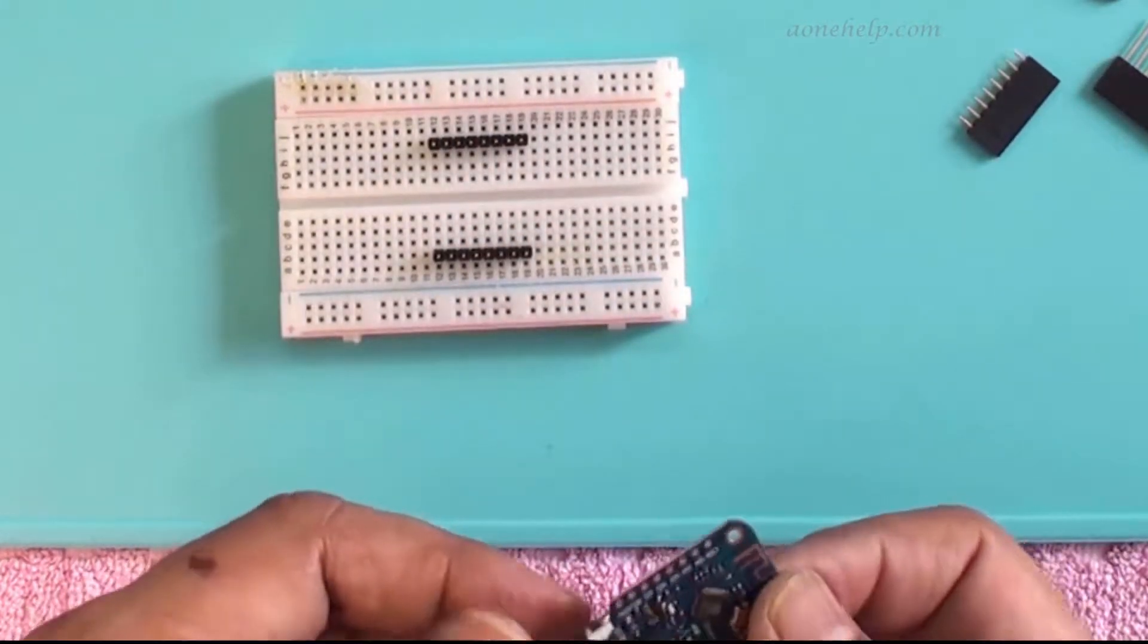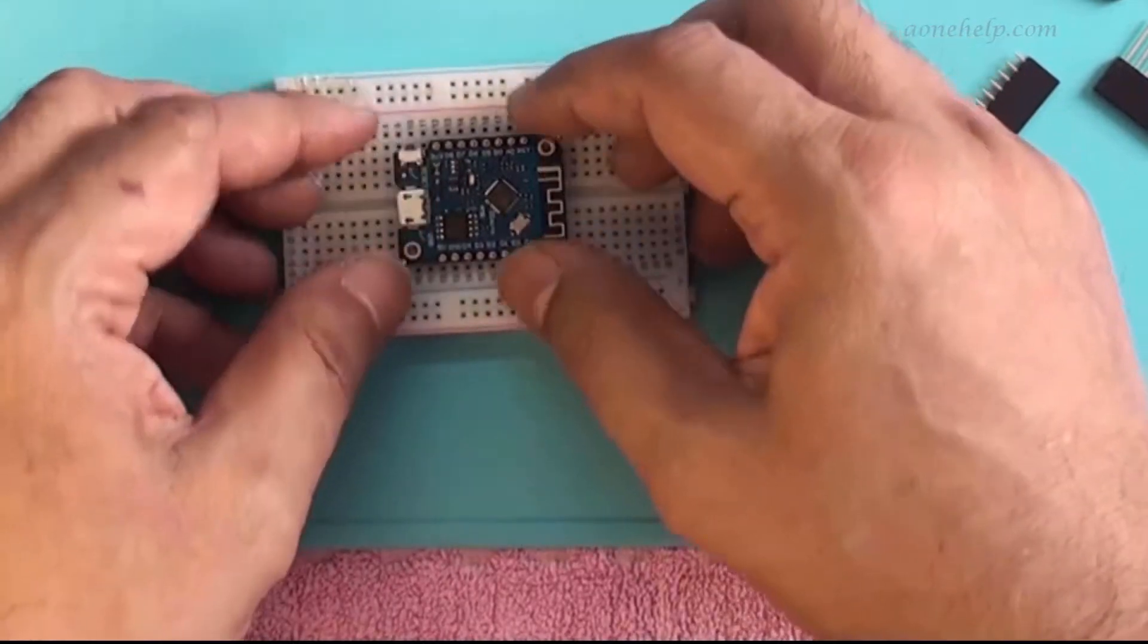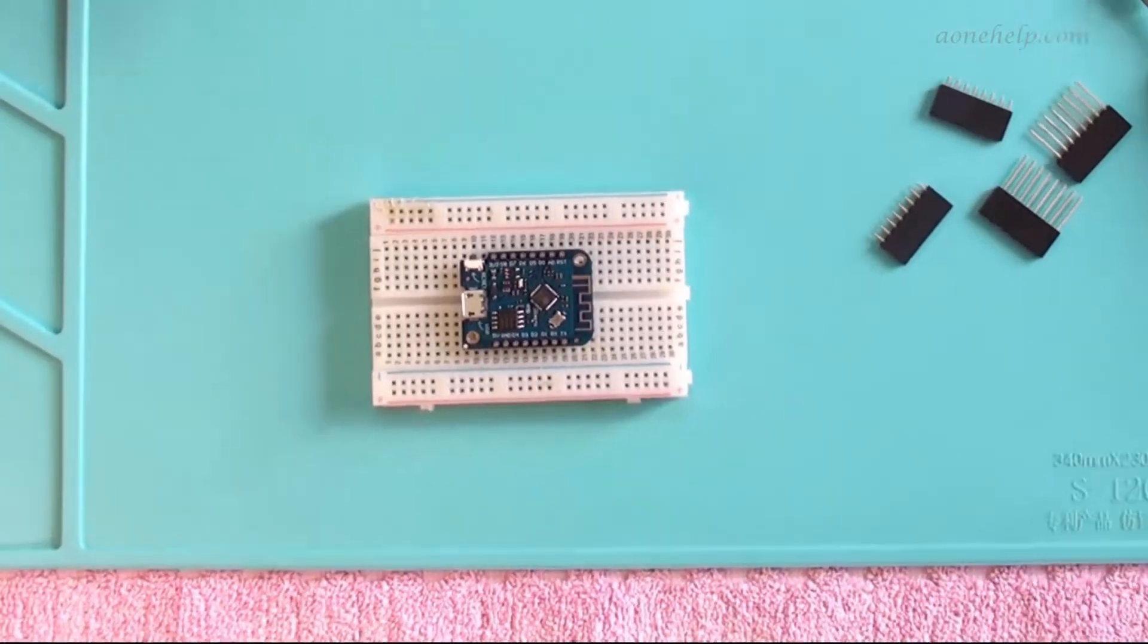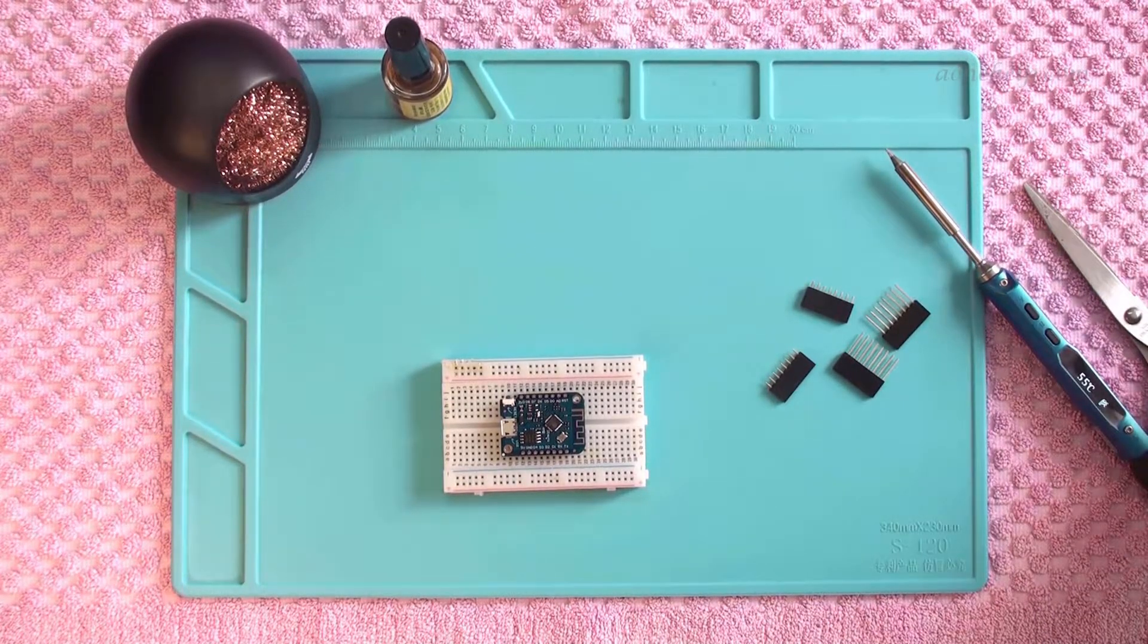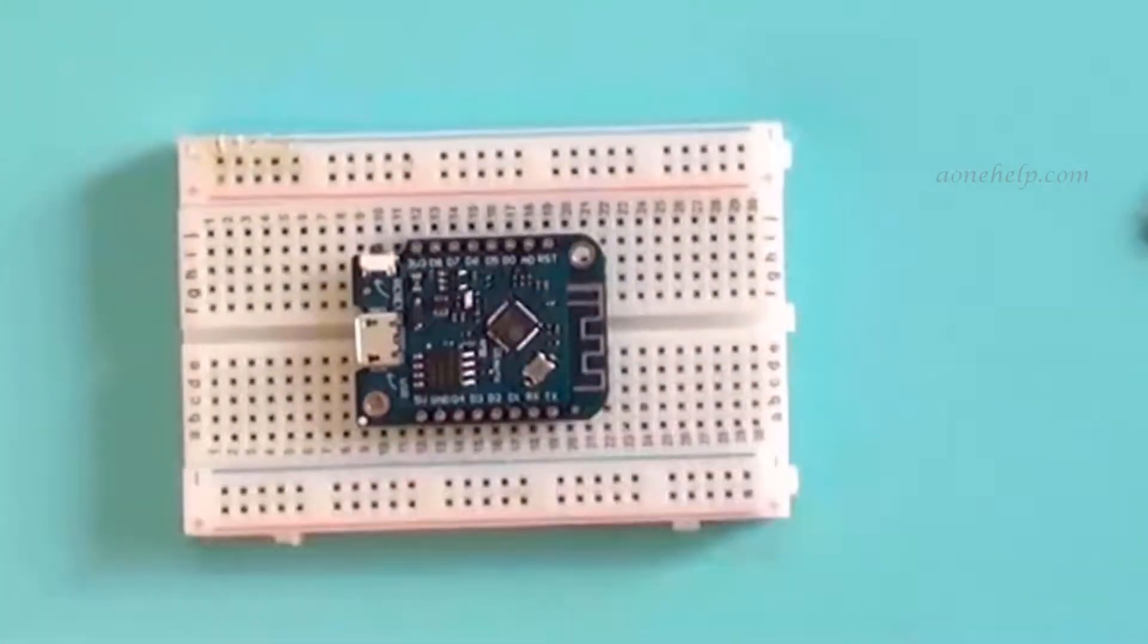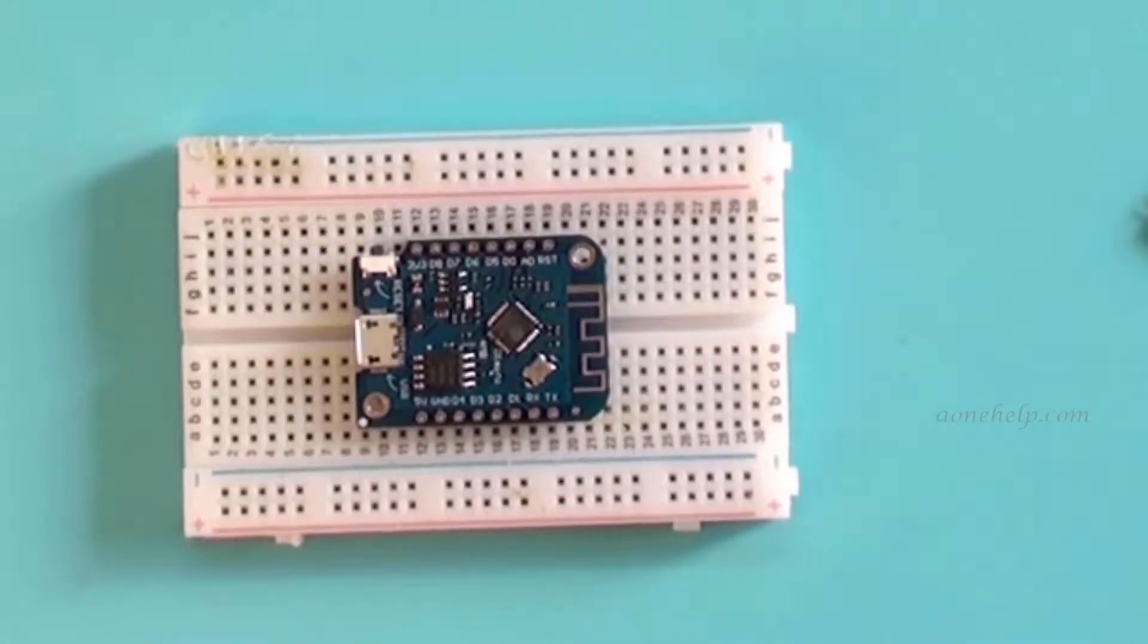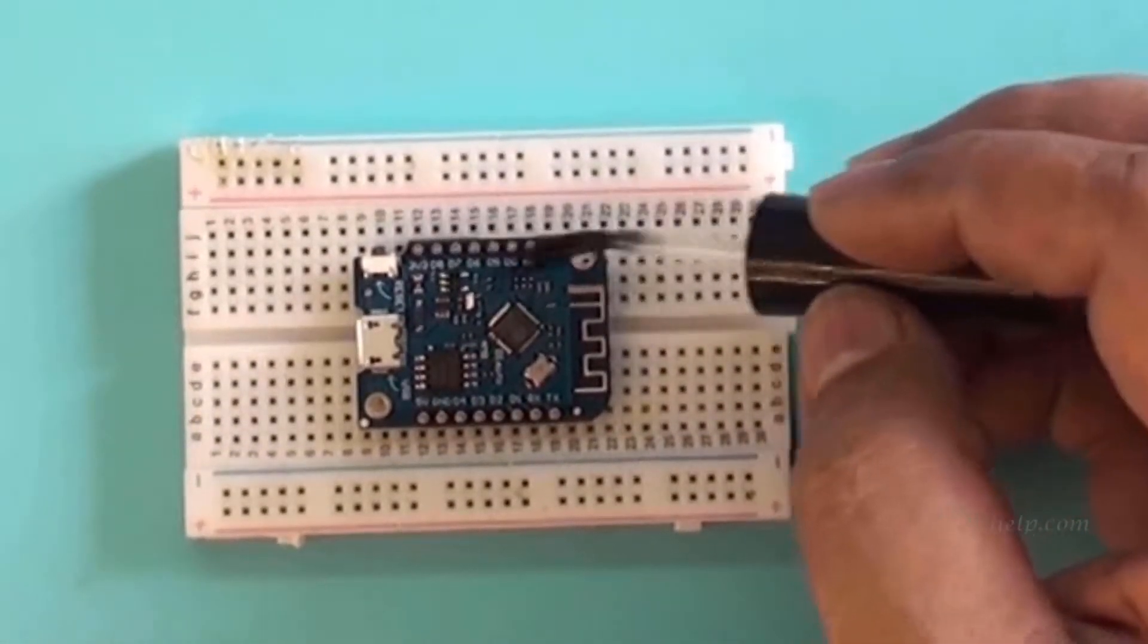Now let's keep aside these female headers and once again fix the module on the small pins of the male headers. Let's switch on the soldering iron. Now let's apply adequate flux on the pins and module. We are using liquid flux. You can use any good flux. Good quality and sufficient quantity of flux should be used. Otherwise we might face problems during soldering and also our solder might end up in dry solder in future.